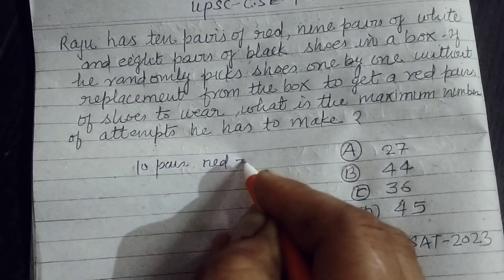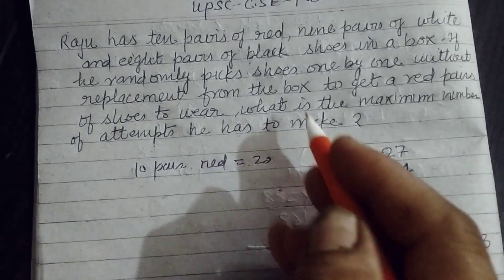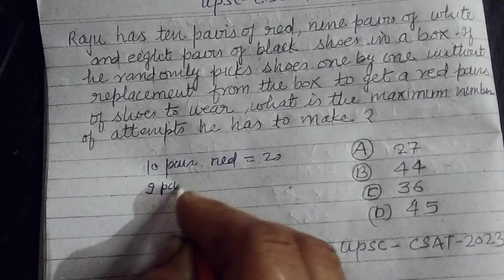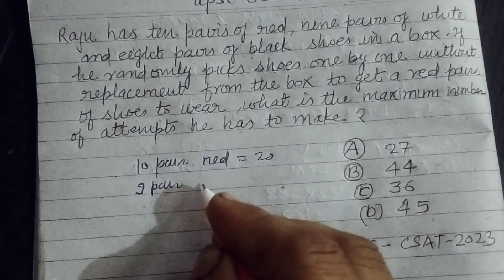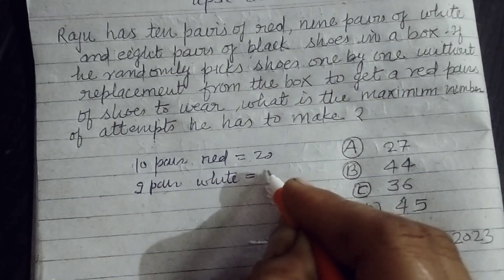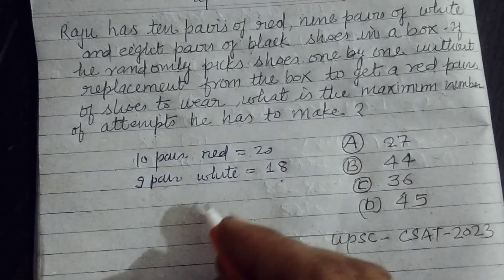Red means 20 shoes. 9 pairs of white, 1 pair means 2, so 9 pairs of white, therefore 9 to 18 shoes are of white.